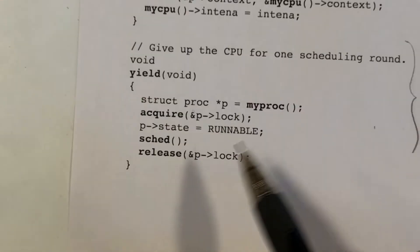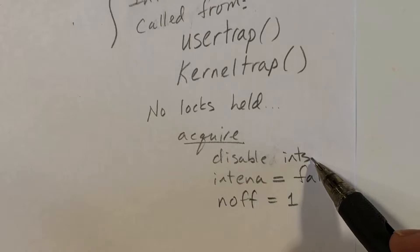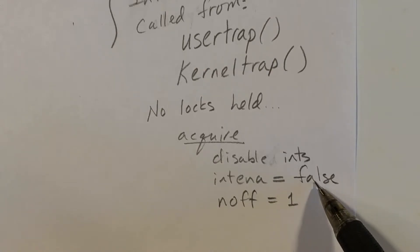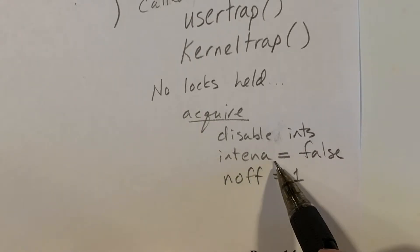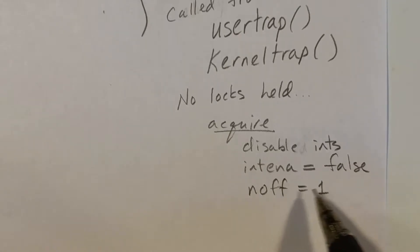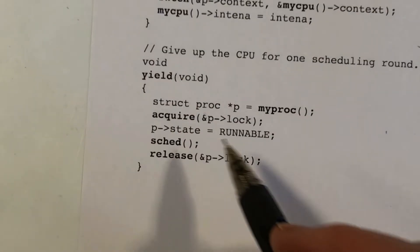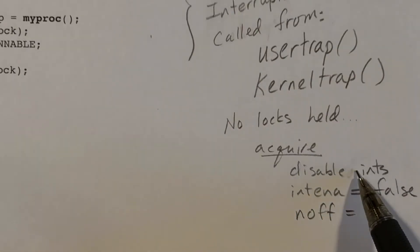When we do the acquire here, it's a spin lock, so it will disable interrupts and remember whether they were enabled previously. Since interrupts are already disabled when entering yield from a trap handler, the interrupts-enabled-previously field will always be false in this path, and the in-off counter will be incremented from zero to one. So when we call SCED, the in-off field will be one and interrupts will be disabled.